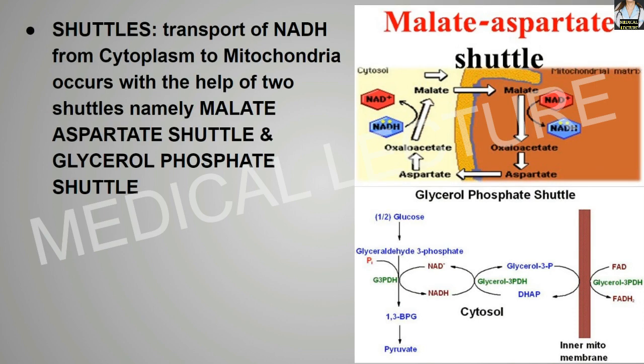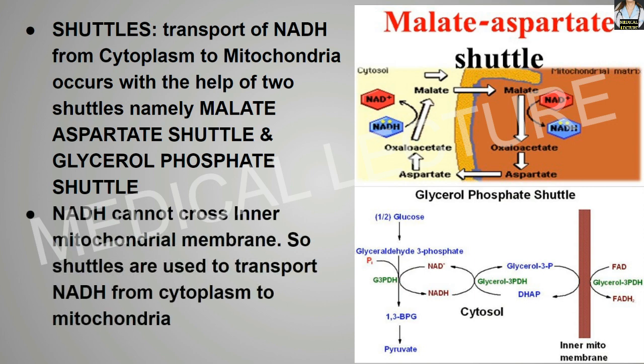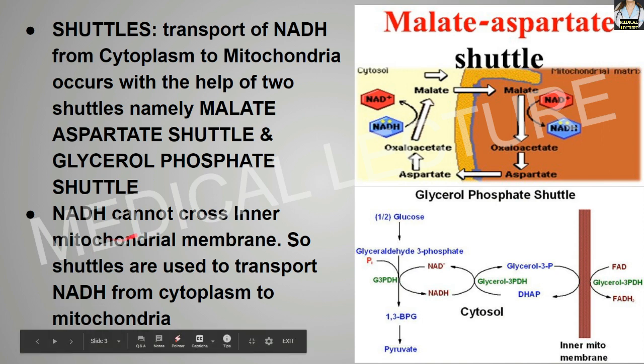Now, shuttles in the metabolism pathway. Transportation of NADH from the cytoplasm to the mitochondria occurs with the help of two shuttles: the malate-aspartate shuttle and the glycerol phosphate shuttle. NADH cannot cross the inner mitochondrial membrane, so shuttles are used to transport NADH from the cytoplasm inside the mitochondria.